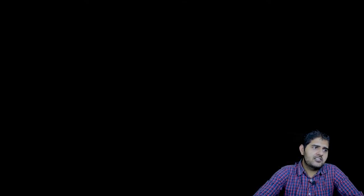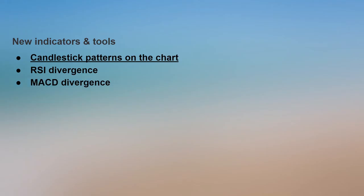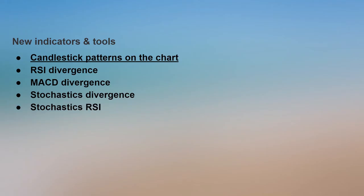There are also some new indicators that have been added. The first is candlestick patterns. Then RSI divergence has been added. MACD divergence has also been added. Stochastic divergence has been added. Then Stochastic RSI as well. Central Pivot Range is also a new feature — a very good feature.